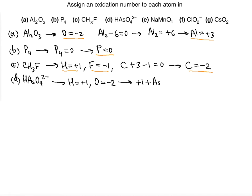There are four oxygen atoms, each negative 2, so that's minus 8. Setting up: plus 1 plus As plus negative 8 equals minus 2 (the ionic overall charge). Solving for As: 1 minus 8 is negative 7; adding 7 on both sides gives minus 2 plus 7, which is plus 5. Those are the oxidation numbers for each atom in this ionic compound.